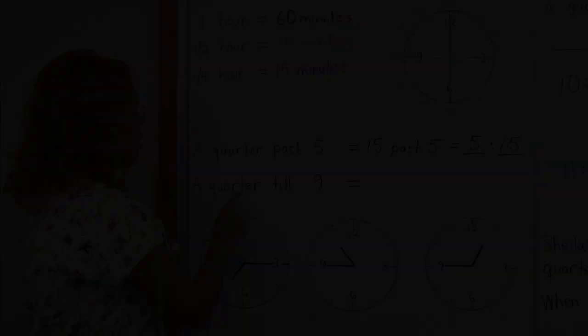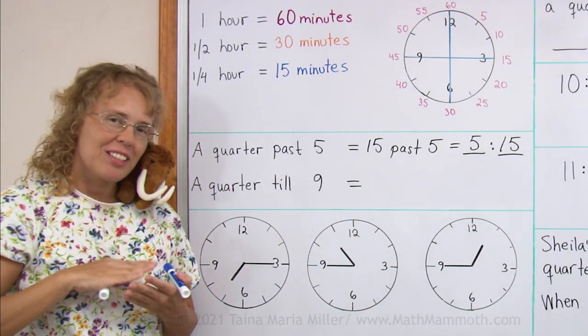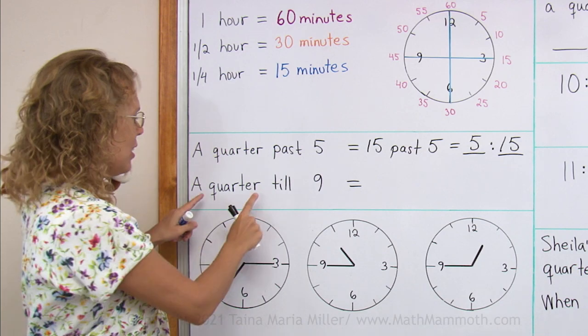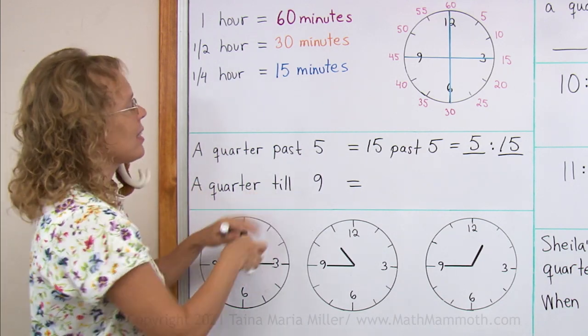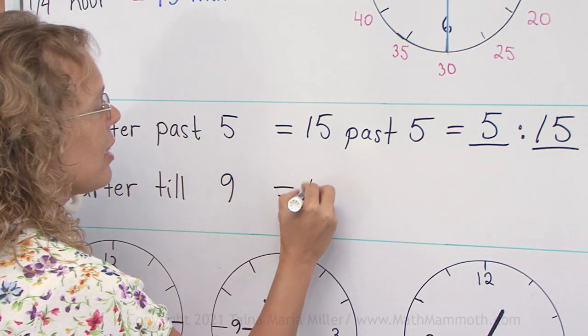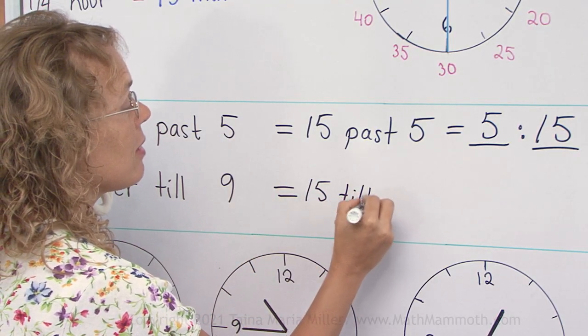A quarter till 9 means simply 15 minutes till 9. Because this quarter means a quarter hour, 15 minutes. 15 minutes till 9. So I would write here 15 till 9.